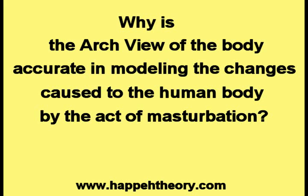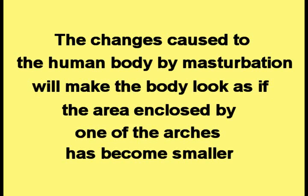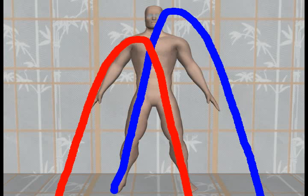This video discusses the question: why is the arch view of the body accurate in modeling the changes to the human body caused by masturbation? A previous video showed that in the arch view of the human body, two arches are superimposed on the body as shown in this picture. According to Happy Theory, the changes caused to the body by masturbation will make the body look as if the area enclosed by one of the arches has become smaller, as demonstrated in this picture.